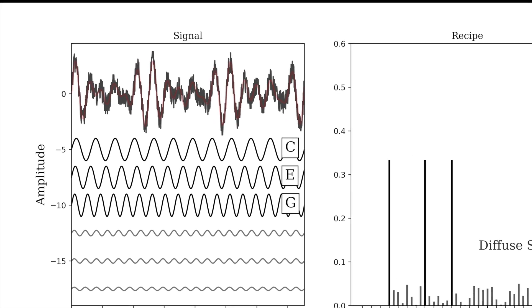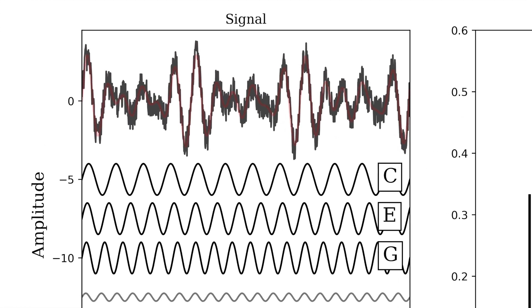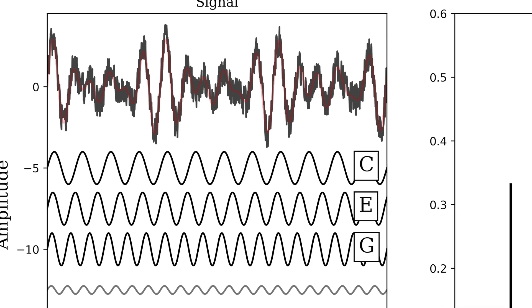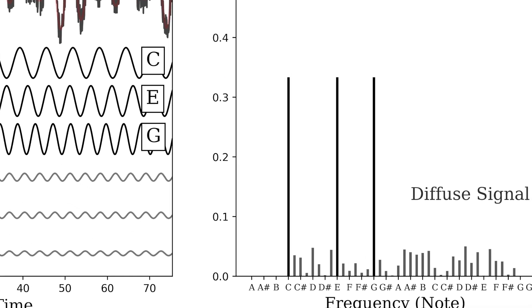What's important to keep in mind is that the loudest notes in our recipe tell us general information about the chord being played. The diffuse part tells us more complex information we could use to identify the instrument.